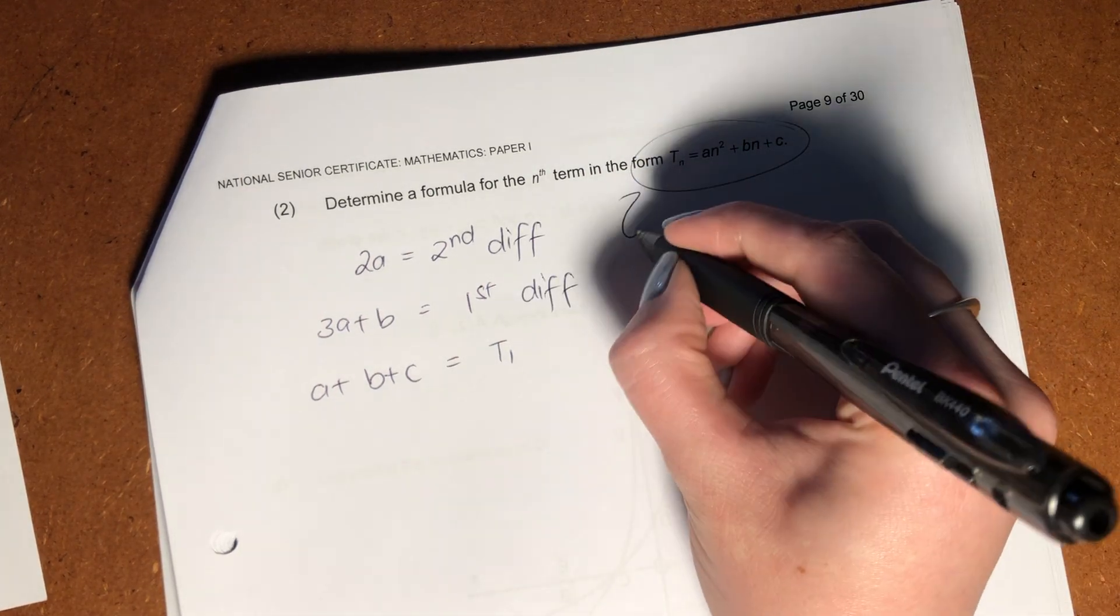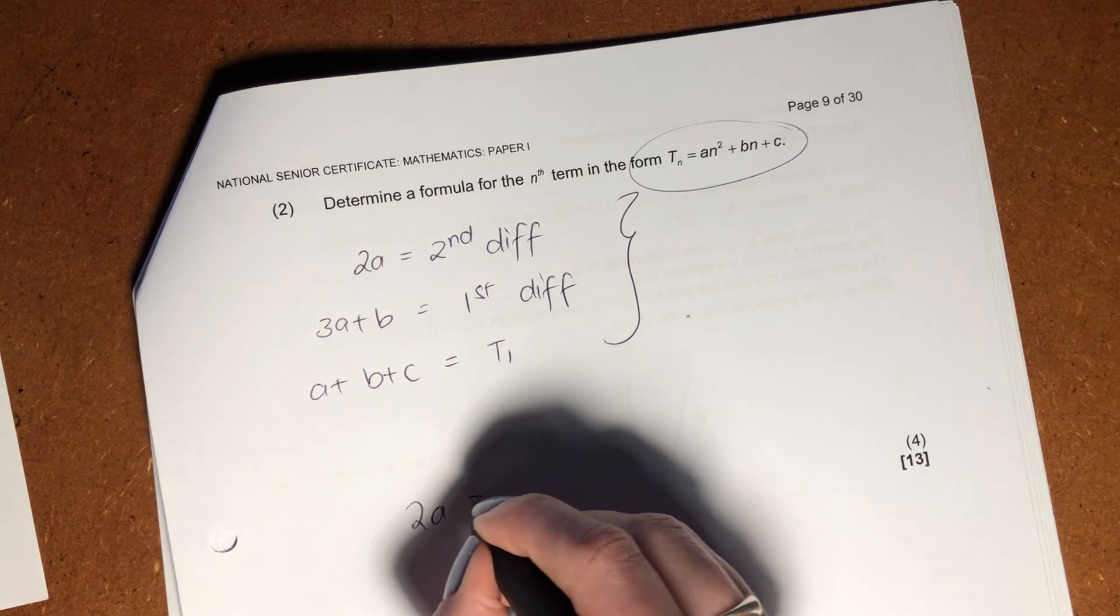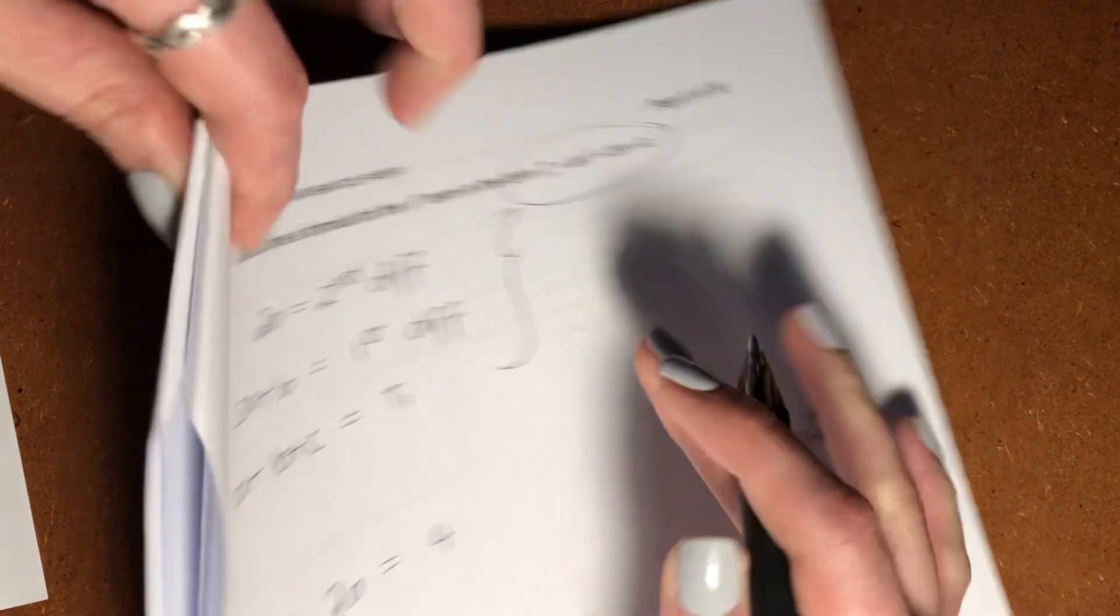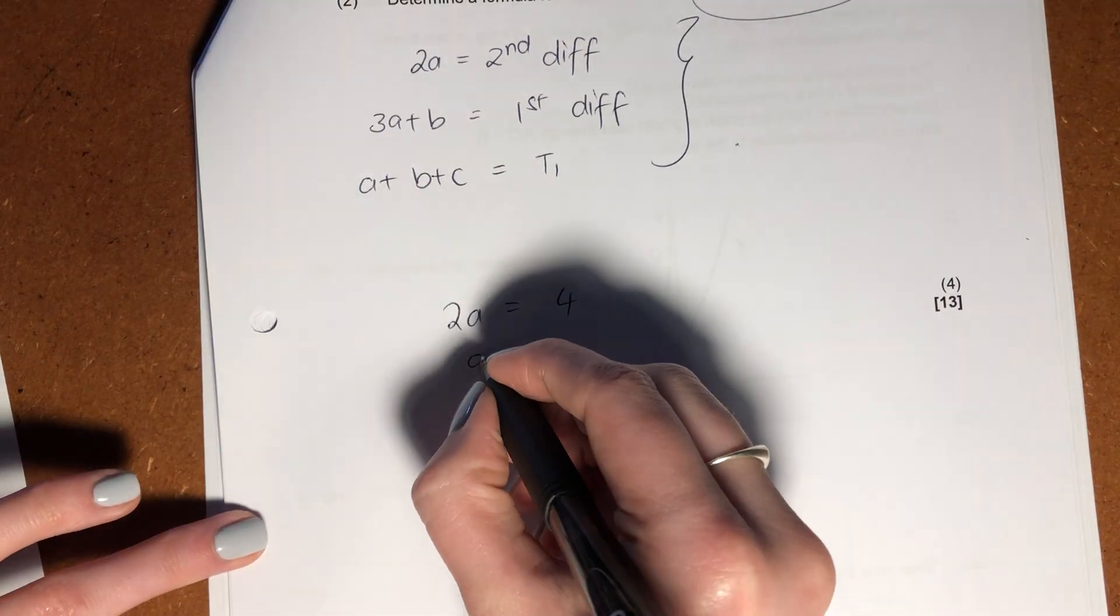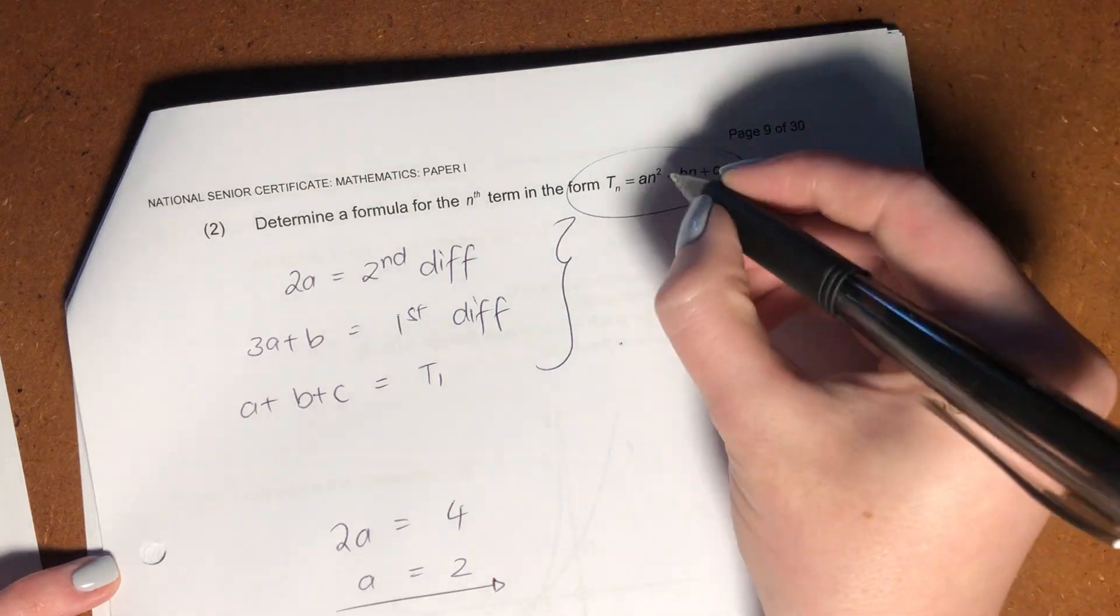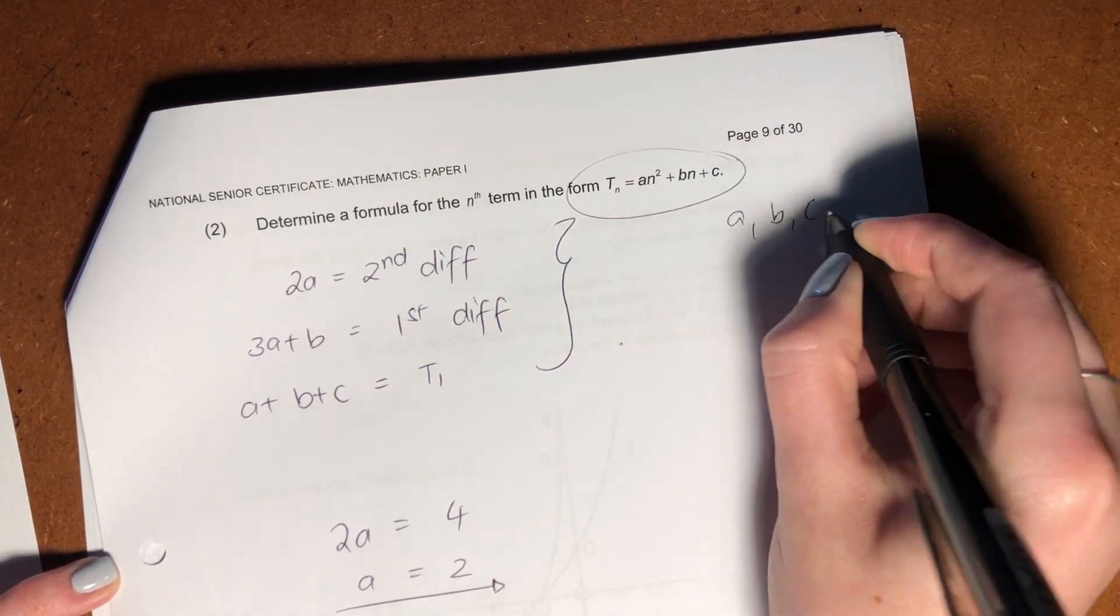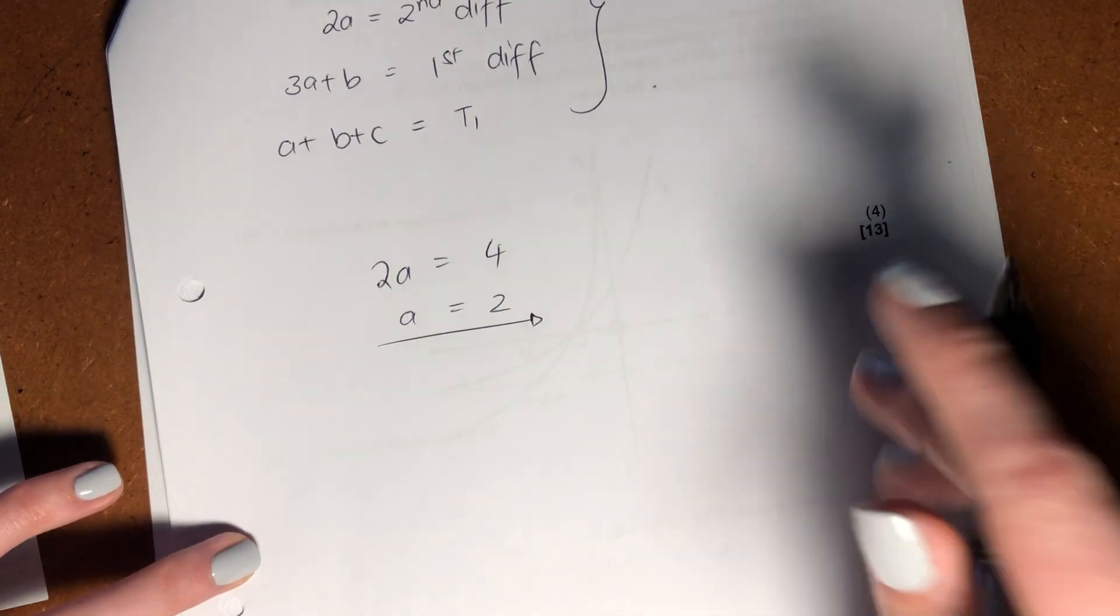So, these are the three formulas you need. Okay? So, you say 2A equals your second difference, which in this case was 4. So, then we know that A is going to equal 2. Because what are we solving for here, importantly? We're not solving for the n values, we're solving for A, B, and C. That's what we're solving for. So, we've solved for A.